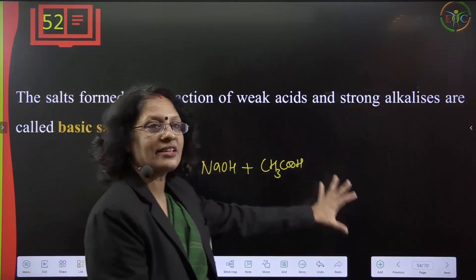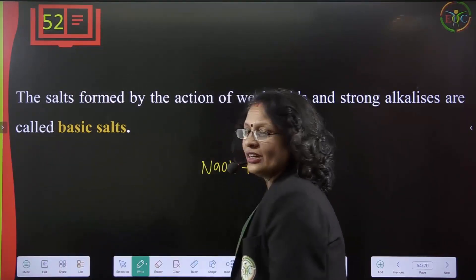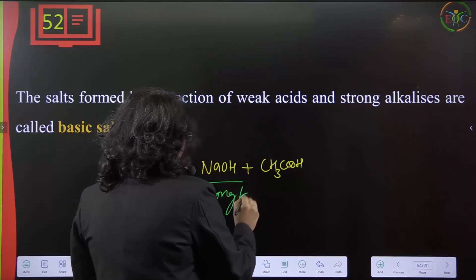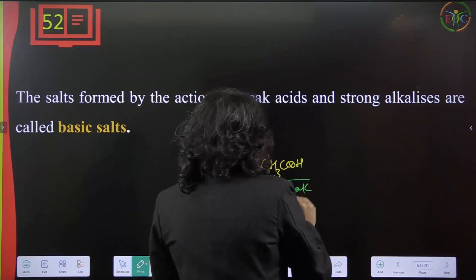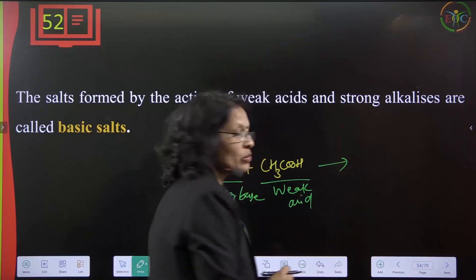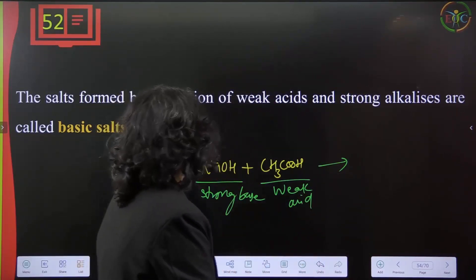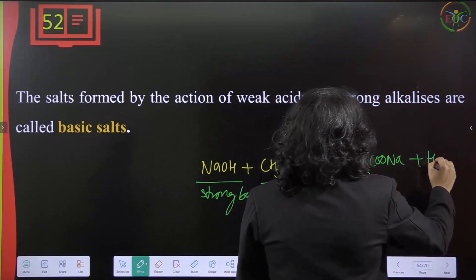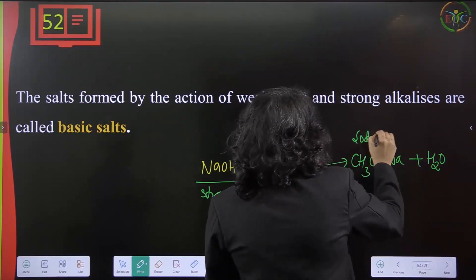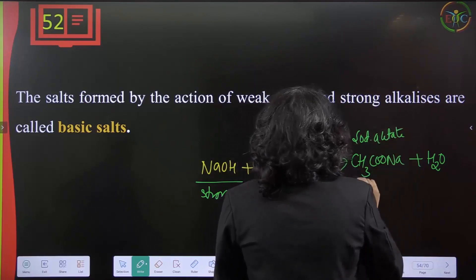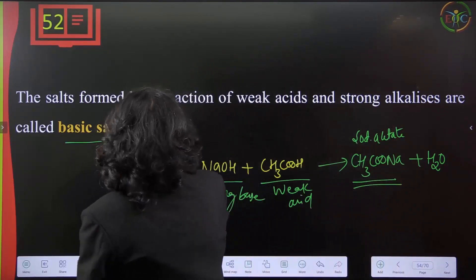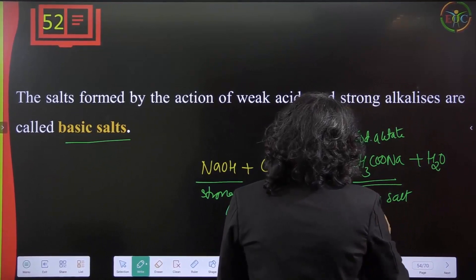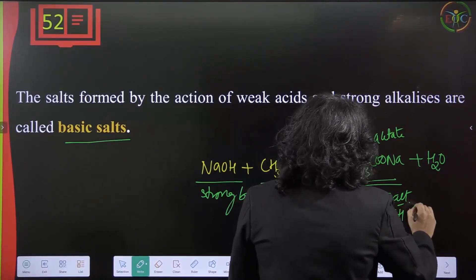Salts formed by the action of a weak acid and a strong alkali are called basic salts. With a strong base and weak acid, the number of OH⁻ ions is greater, so the salt has more basic character. The product sodium acetate (CH₃COONa) is obtained with water — this is a basic salt because more OH⁻ ions are present.